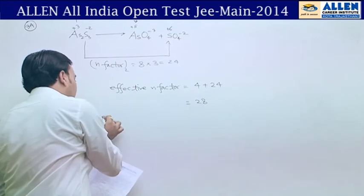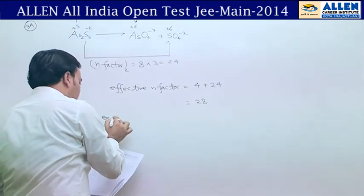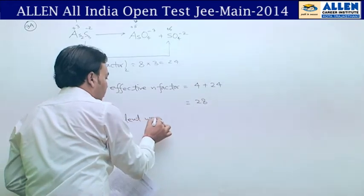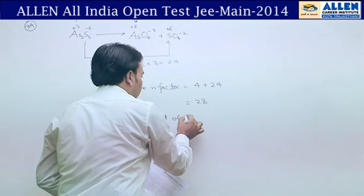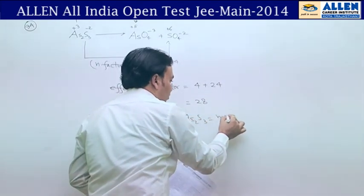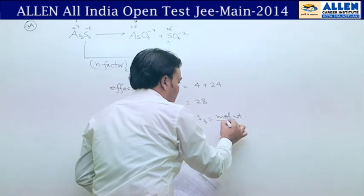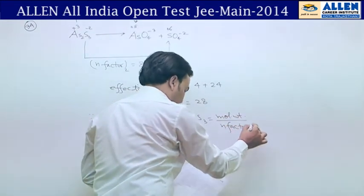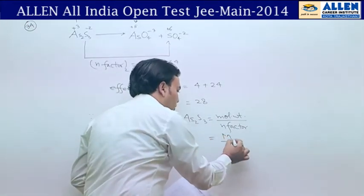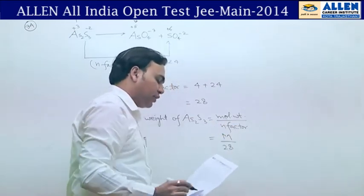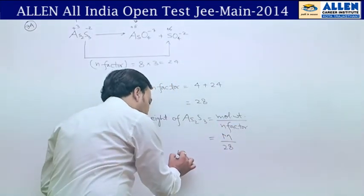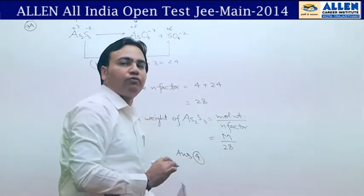Equivalent weight has been asked. Therefore, equivalent weight of arsenic sulfide equals molecular weight upon N-factor. In the question, molecular weight is M, and N-factor is 28, so equivalent weight equals M/28. This is the answer, and it corresponds to option number 4. The right option is 4.